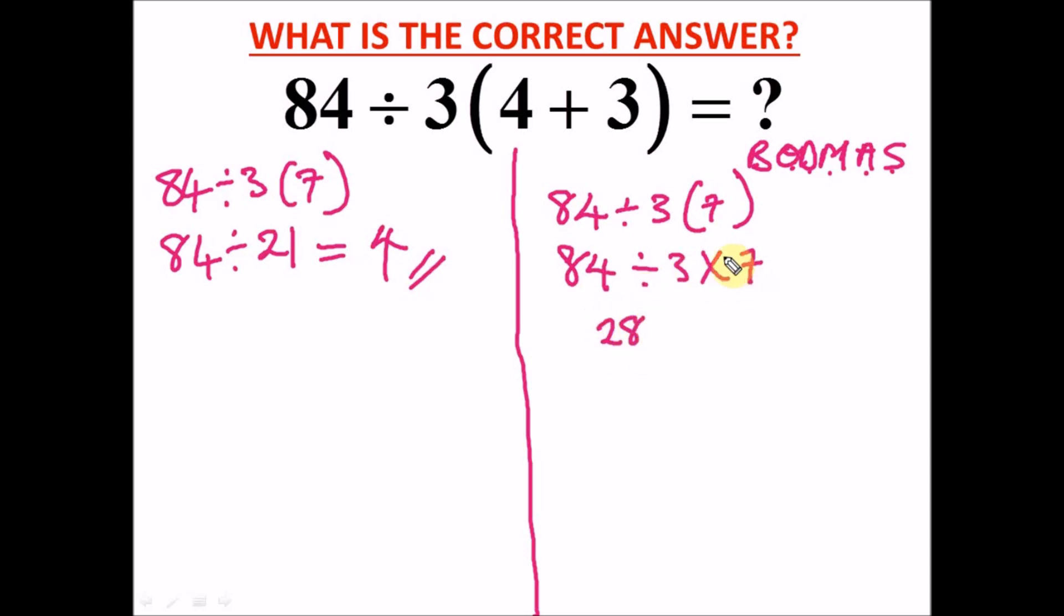And the next operation to perform is multiplication. So what is it? 28 times 7 is equal to 196. So this is the correct answer.